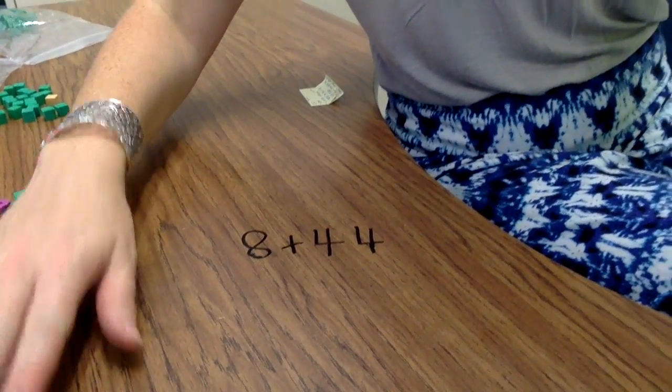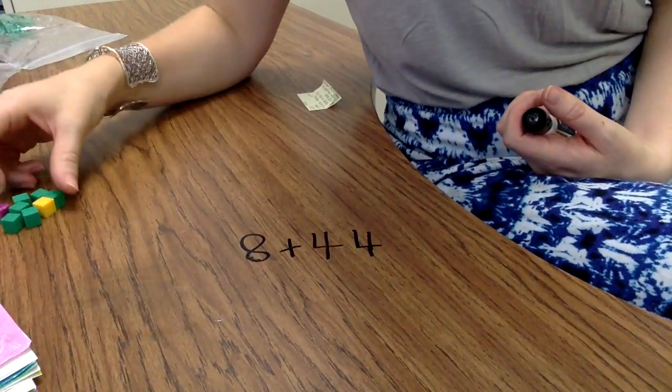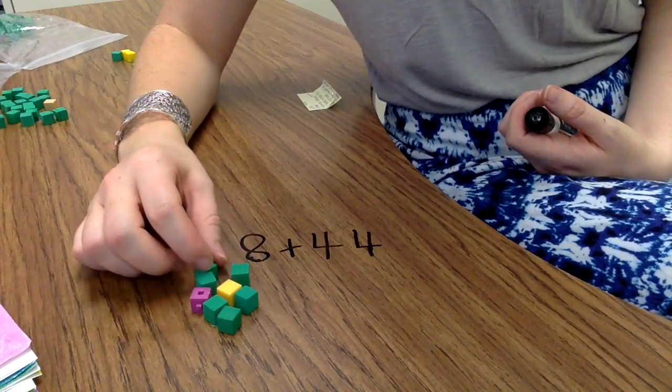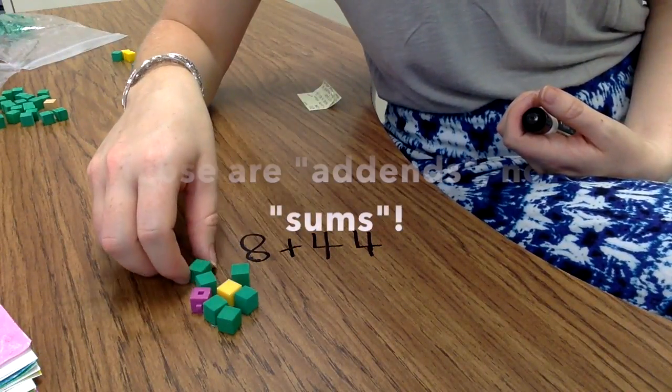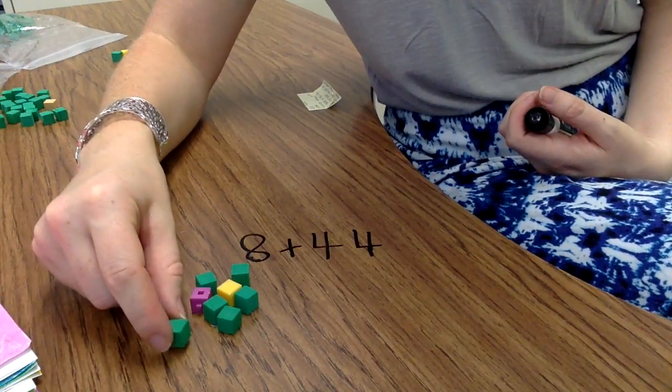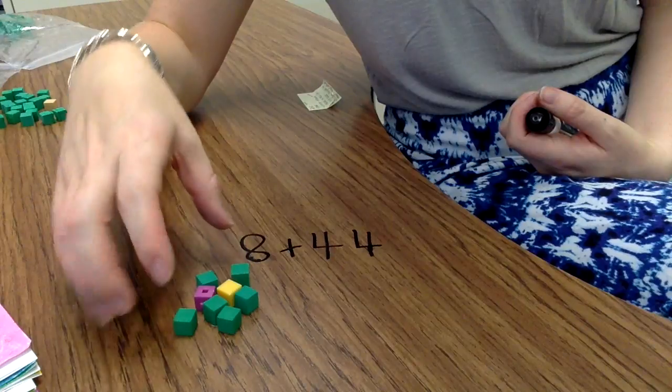So here's the problem we're focused on again, 8 plus 44. A way that we would have kids think about this in a concrete way is to think of it in terms of how many tens and how many ones are in each of the sums. So for eight we call these units or ones when we're talking about place value. So this is a concrete model of 8.